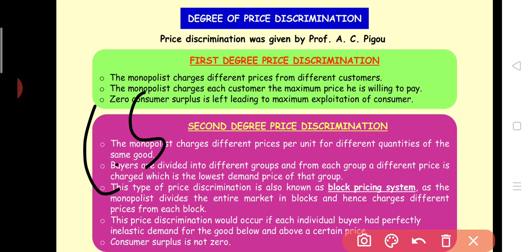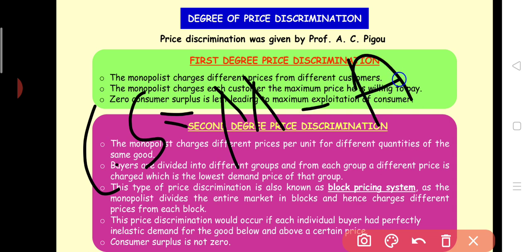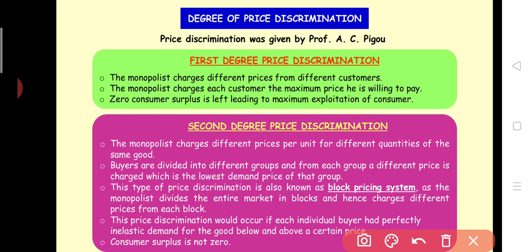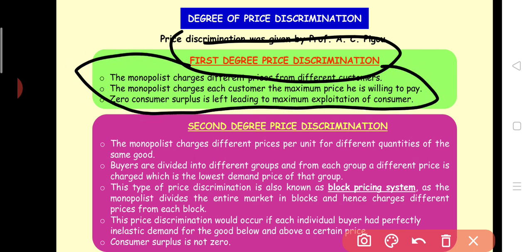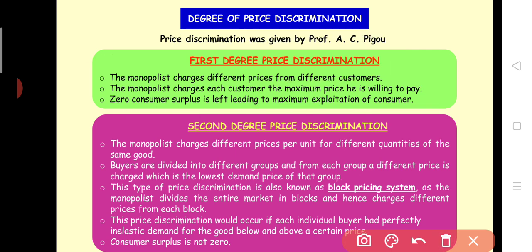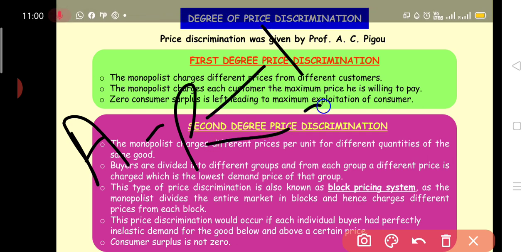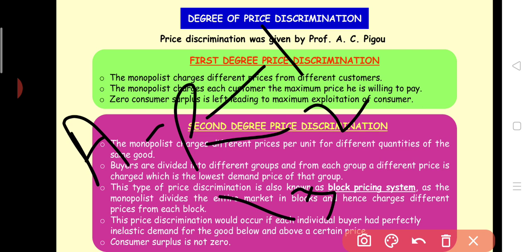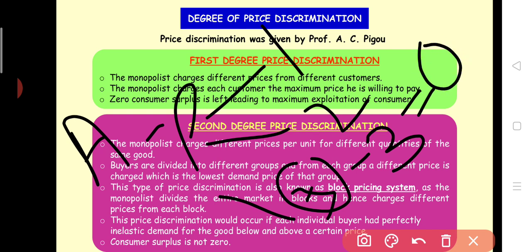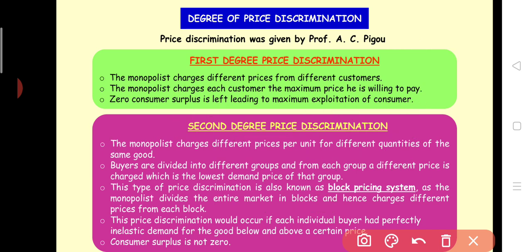Consumer surplus is the difference between the maximum price a consumer is willing to pay and the actual price paid in the market. In first degree price discrimination, the monopolist charges each customer the maximum price they are willing to pay. For example, in an auction for a painting, bidding goes 1 lakh, 2 lakh, 3 lakh — the buyer was willing to pay 3 lakh and paid exactly 3 lakh, so consumer surplus is zero. Therefore, first degree price discrimination most maximally exploits the consumer.